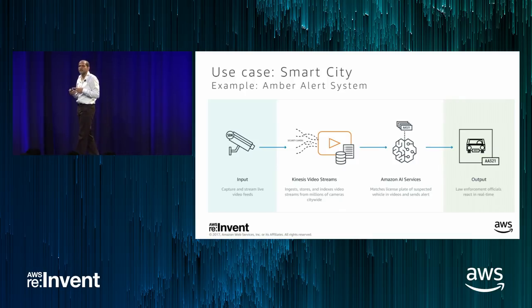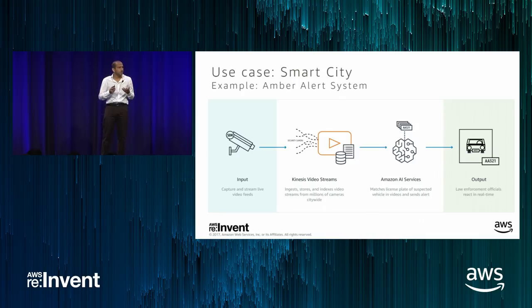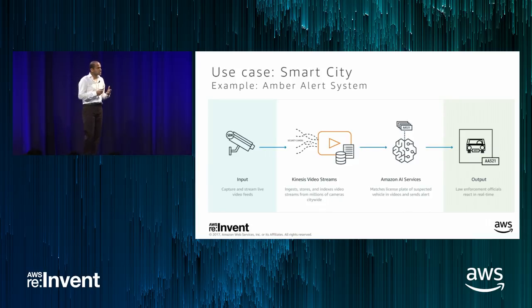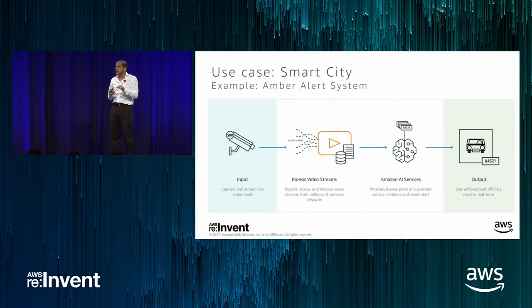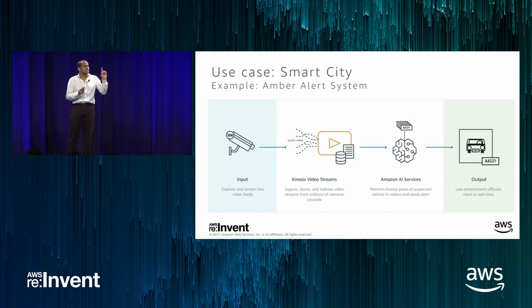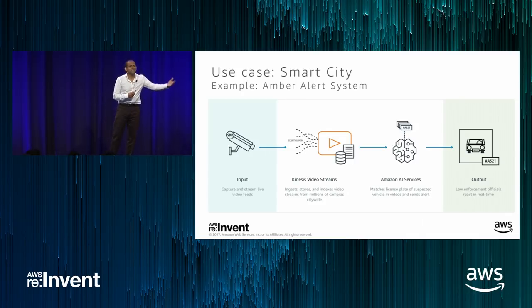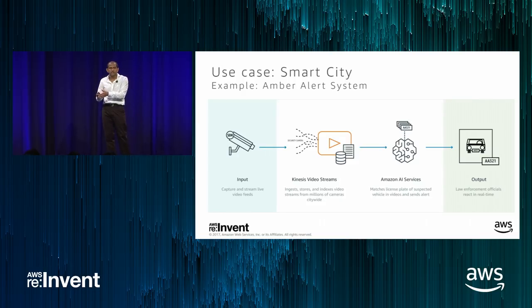Another example is from the smart city domain. Customers have asked about how to build the next generation of an Amber Alert system — used in the U.S. in the event of a missing child. In this scenario, customers want to immediately detect a suspect based on license plate reader data and the make and model of the vehicle, giving all cameras the intelligence to identify where the suspect has been seen, using technology in sensible, responsible manners to drive that level of security.